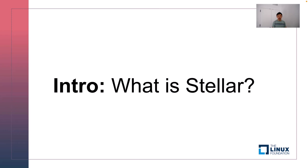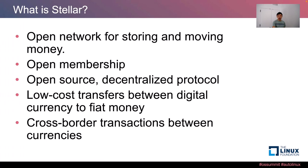I wanted to start this talk by talking about what Stellar is, because that's what everything is based on. So what is Stellar? It's an open network for storing and moving money. If you're really into cryptocurrencies, you might have heard of Stellar Lumens. The network has an open membership policy, so anyone can join. The code is open source and it uses a decentralized protocol — meaning there is no one single organization checking or verifying transactions. Main use cases include low-cost transfers between digital currency and fiat money, such as US dollars or euros, and cross-border transactions between currencies.